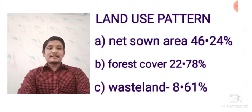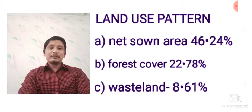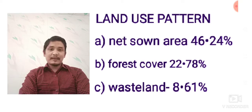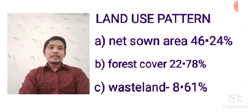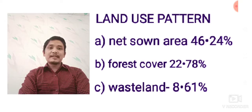Hello everyone, today I will discuss the land use pattern — this is a very important question from the examination point of view. Land use pattern means how the land is utilized. In India, 46.24% of the total land is the net sown area, 22.78% is the forest cover, and 8.6% is the wasteland.